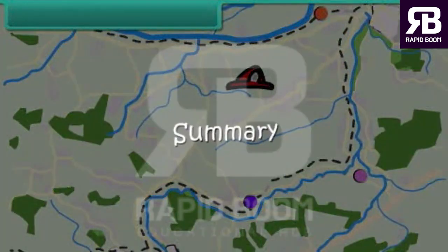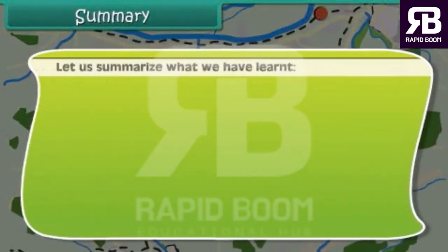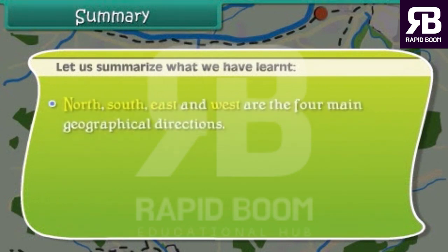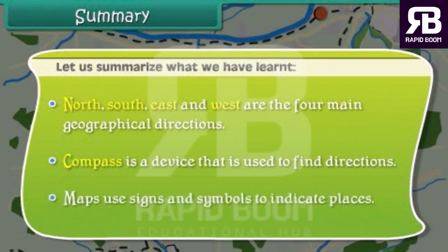Summary. Let us summarize what we have learned. North, South, East and West are the four main geographical directions. A compass is a device that is used to find directions. Maps use signs and symbols to indicate places.